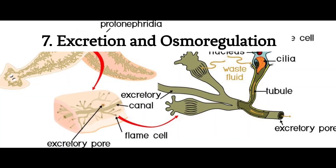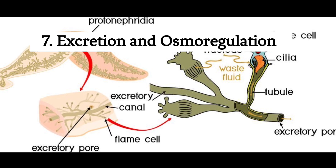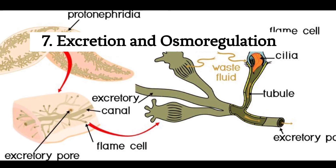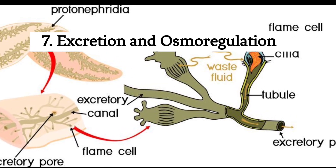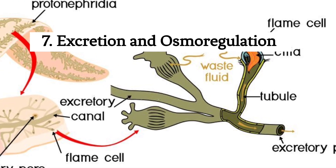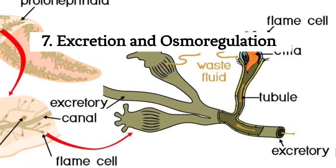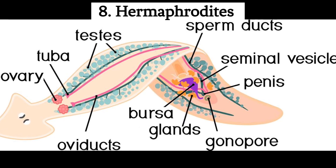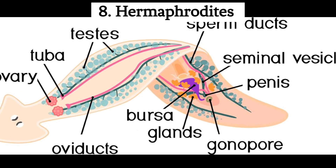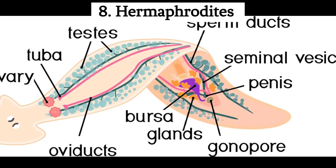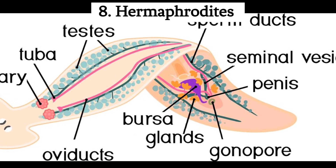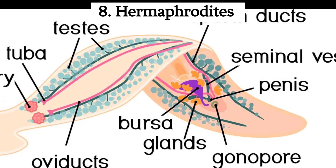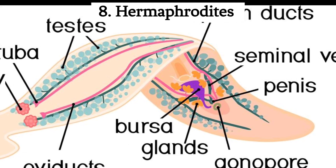Seventh, excretion and osmoregulation: they lack specialized excretory organs but rely on protonephridia, which are network tubules that help regulate water and waste balance. Eighth, hermaphroditic reproduction: many flatworm species are hermaphrodites, meaning they have both male and female reproductive organs. They can engage in cross-fertilization with other flatworms.